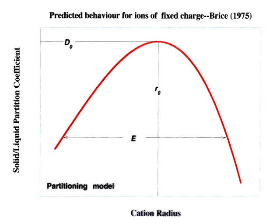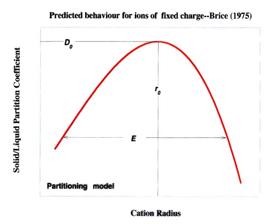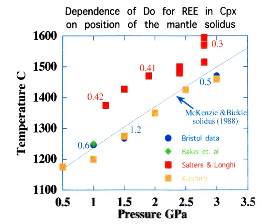I should say that as soon as I mention thermodynamics, everyone switches off. So I'll try and make this as painless as possible — just keep in gear for about a minute and a half. What we do is treat the exchange of this cation — the one that fits in perfectly — between the crystal and melt as a melting reaction. A melting reaction will have a characteristic enthalpy, entropy, and volume of fusion.